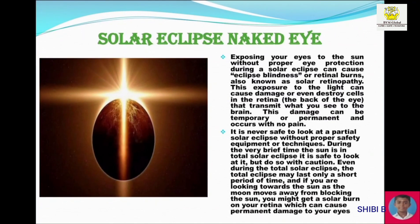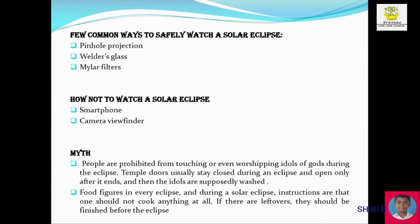My name is Nishimi and I am going to talk about the Solar Eclipse. A solar eclipse occurs when the moon gets between the Earth and the Sun. Without eye protection, it can cause eclipse blindness, which can even destroy cells in the retina. It is never safe to look at an eclipse directly or through a camera, but one can observe it with proper protection. Some myths say people are not allowed to worship idols of God during an eclipse and one should not eat anything at all.